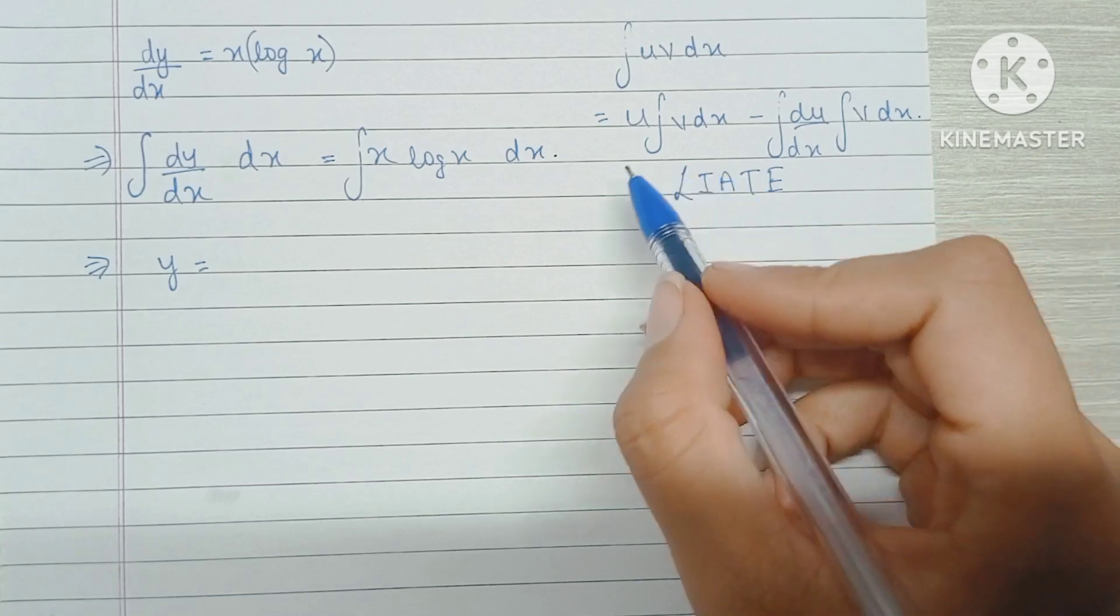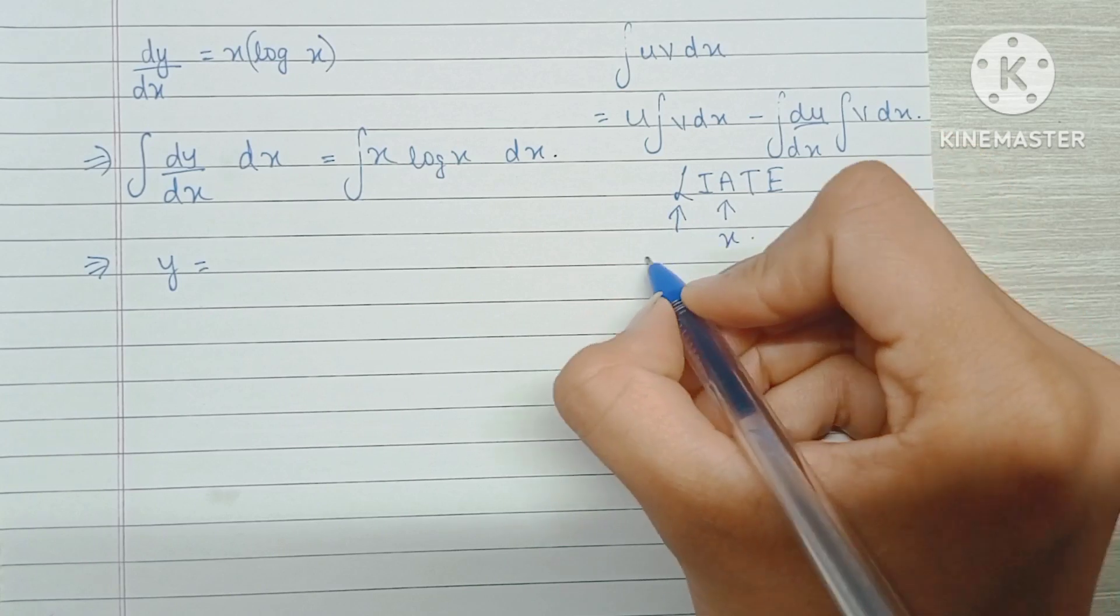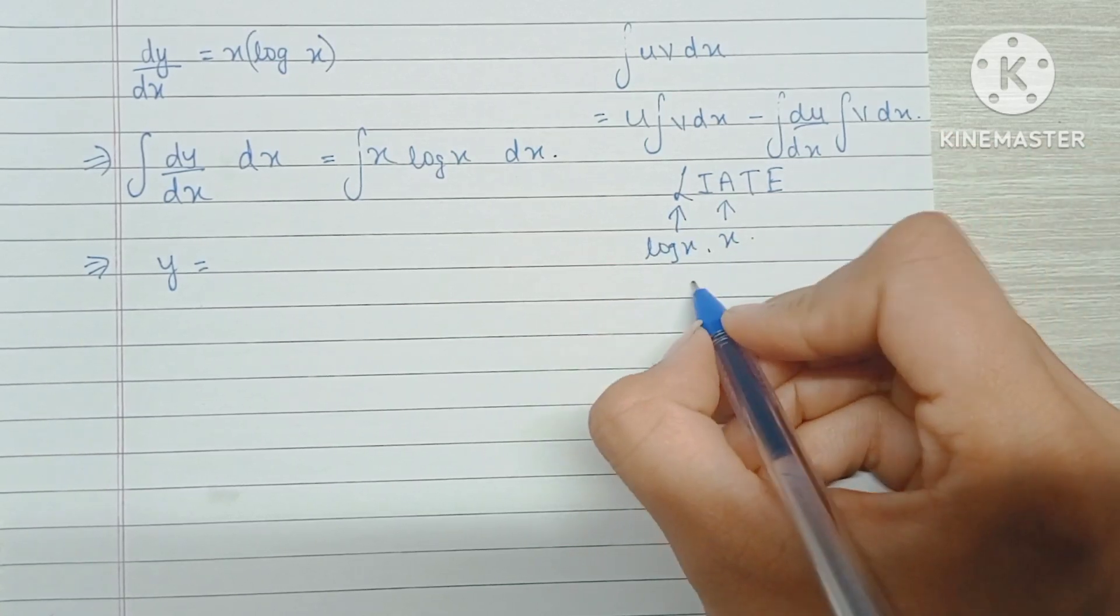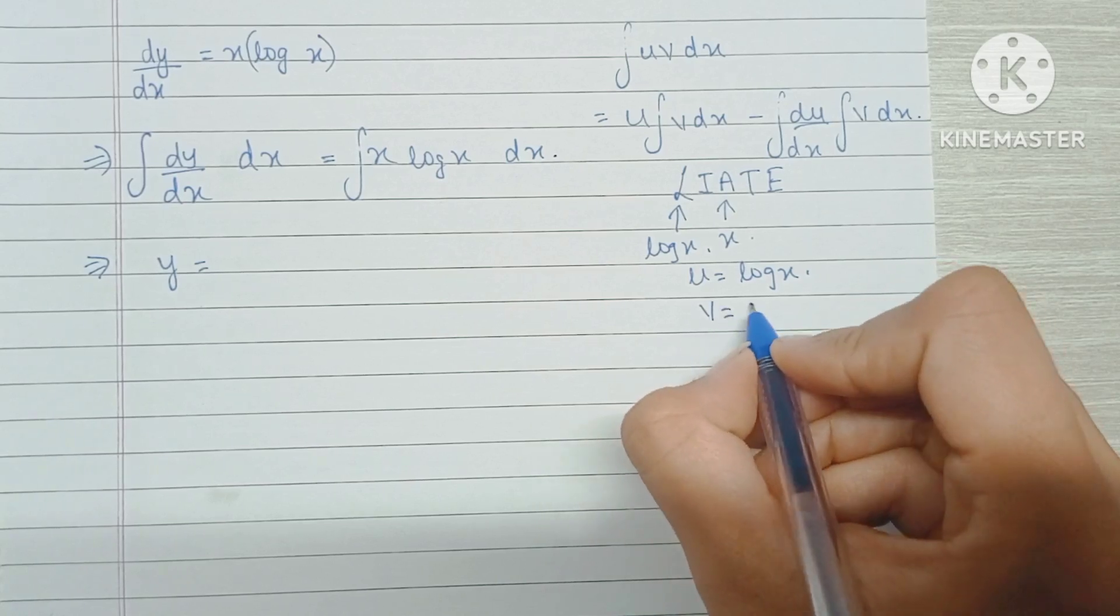Based on the ILATE rule, we have an algebraic term which is x and we have the log term, which means our u is log x and v is x.